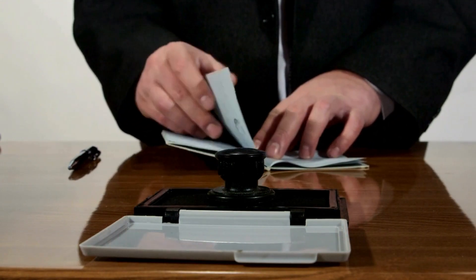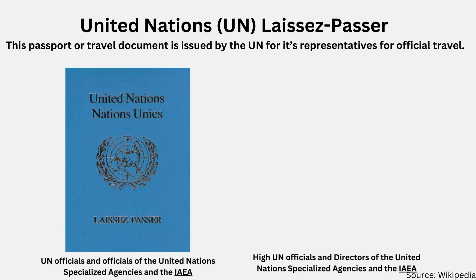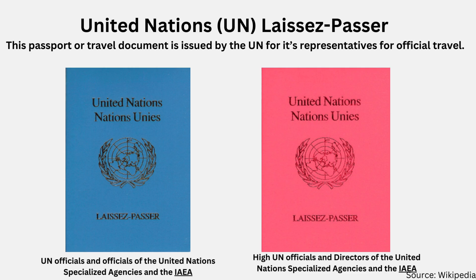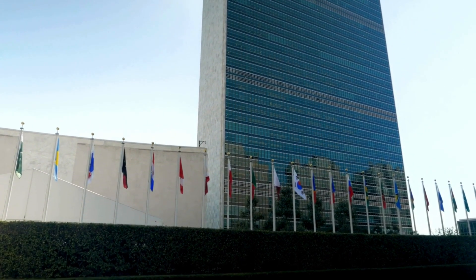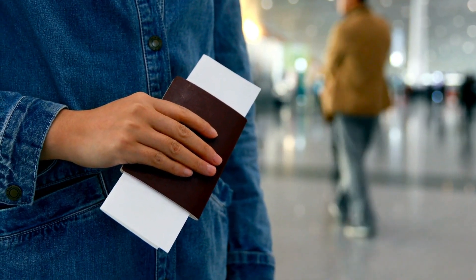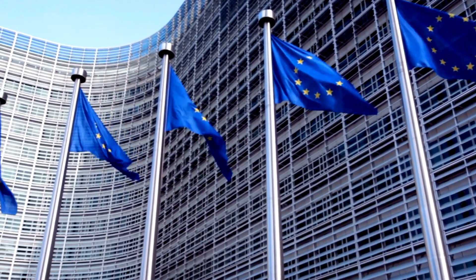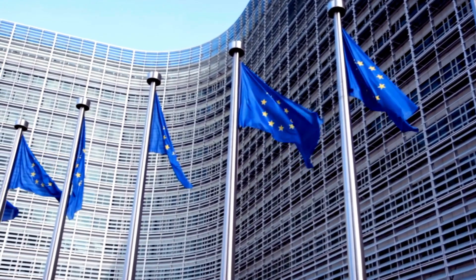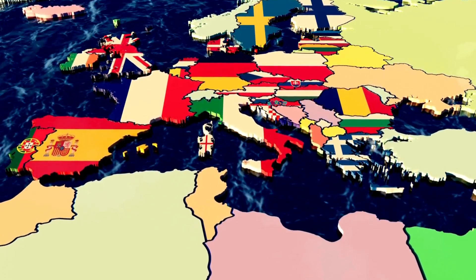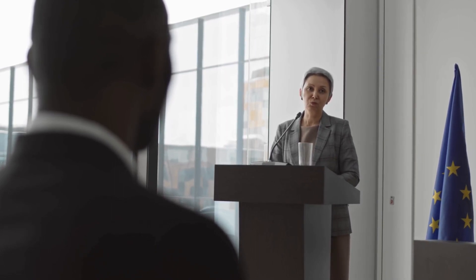Not all passports are issued by governments — some passports are issued by international organizations to their employees. For example, the United Nations issues a travel document for its representatives for official travel. The European Union issues passports — also known as Laissez-Passer — which are diplomatic and service passports issued to its officers, but not to the general public. Individual European Union countries issue passports to their respective nationals and citizens, but EU passports are only issued to diplomats of the European Commission, the European Council, and other European delegates.